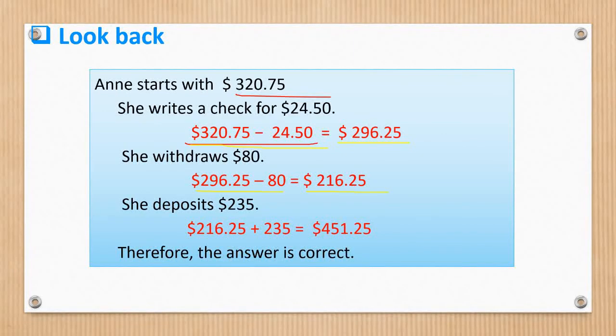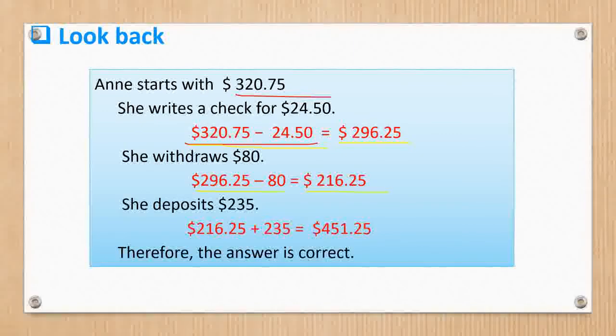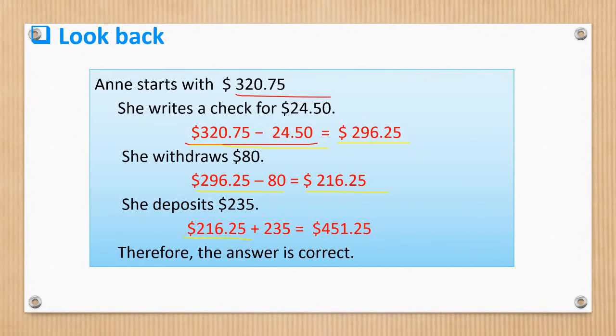Now, but she deposited $235. That is why we have $216.25 which is the balance, her account balance, plus $235, which makes a total of $451.25. Therefore, our answer of $320.75 is correct.